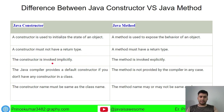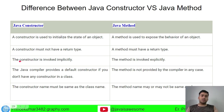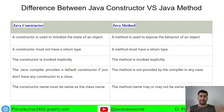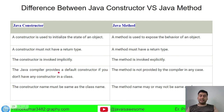A constructor is invoked implicitly — you don't need to call it separately. Whenever you create an object, the constructor is automatically invoked. A method is invoked explicitly; if you don't call the method, it will not execute. The constructor implicitly executes whenever you create an object based on its parameters.